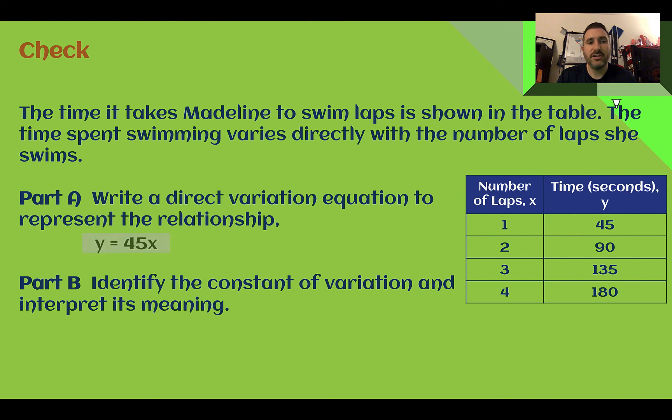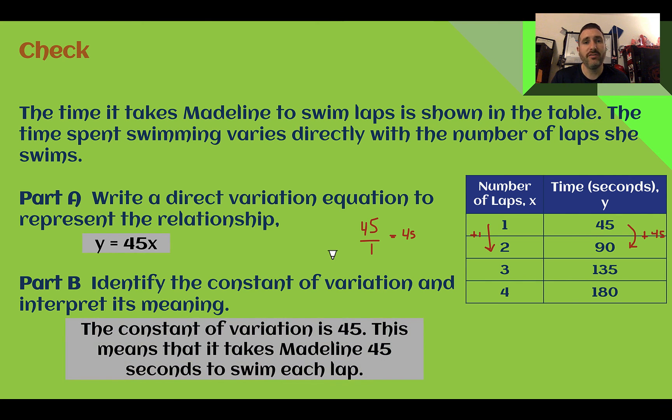Check your answer. First, the direct variation equation is y equals 45x. Our change in y, it went up 45 for one more lap. So this was just 45 changing the y over 1, which is 45. Y equals 45x once we replace that for m. So what's our constant of variation? It is 45, what we just found. What does it mean in this context? 45 is how long it took her to swim one more lap. So it took her 45 seconds to swim each lap.